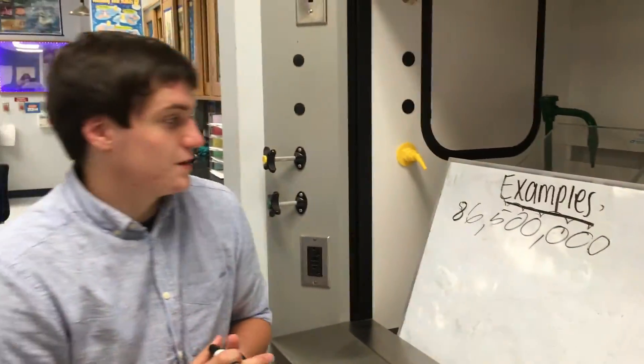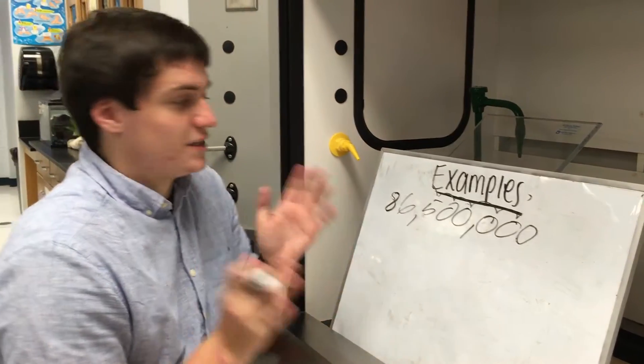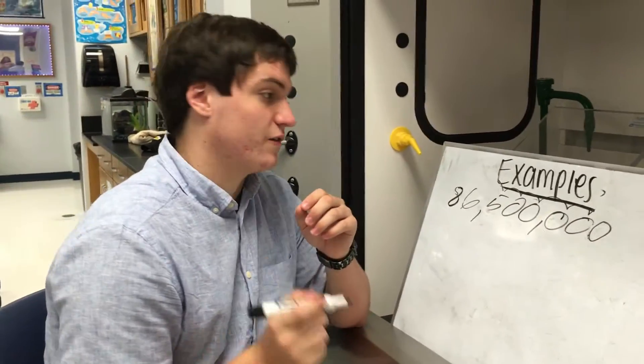Scientific notation to express data like the population of the world which is seven million, and it's expressed seven times ten to the ninth. We're using scientific notation for this number to get rid of the seven digit places to reduce the number so it's easier to read.